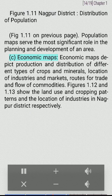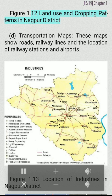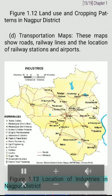C. Economic maps depict production and distribution of different types of crops and minerals, location of industries and markets, routes for trade and flow of commodities. Figures 1.12 and 1.13 show the land use and cropping patterns and location of industries in Nagpur district. D. Transportation maps show roads, railway lines and the location of railway stations and airports.